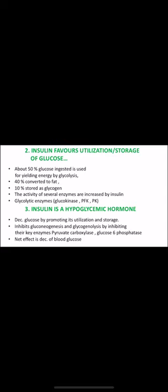Insulin is a hypoglycemic hormone — it decreases blood glucose by promoting utilization and storage. It inhibits gluconeogenesis and glycogenolysis by inhibiting key enzymes, preventing new glucose formation and glycogen breakdown, thus keeping plasma glucose at lower levels. The net effect is decreased blood glucose.